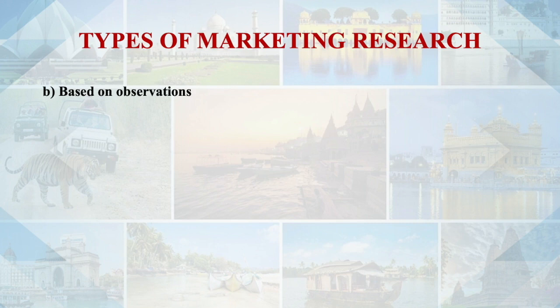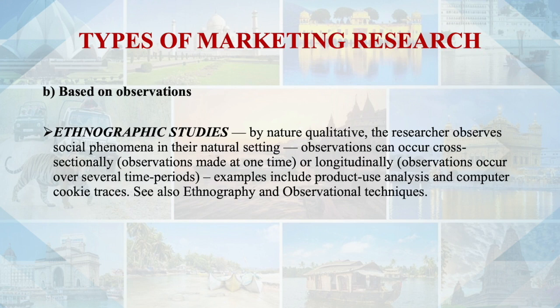Observation-based studies are ethnographic in nature and qualitative. The researcher observes social phenomena in their natural setting. Observations can occur cross-sectionally — at one point in time — or longitudinally, over several time periods. Examples include product use analysis and computer cookie choices.